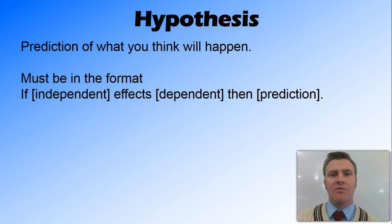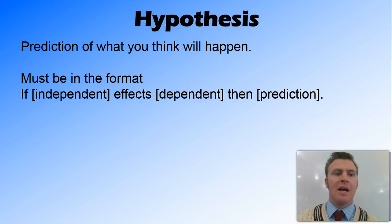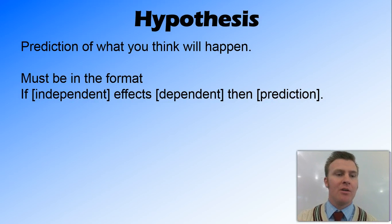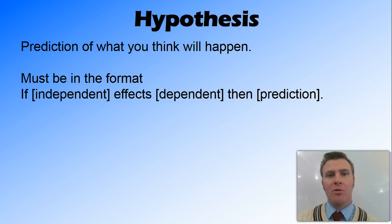You then need to form a hypothesis. A hypothesis is a prediction of what you think will happen, and there's a specific format in science: it has to be in an if-then format and must include your independent and dependent variables as well as a prediction of what's going to happen. The formula is: if your independent variable affects your dependent variable, then you make a prediction of some sort.